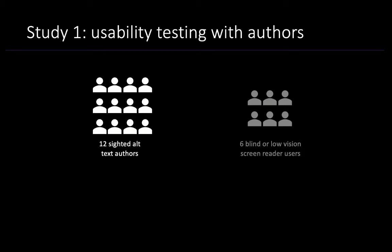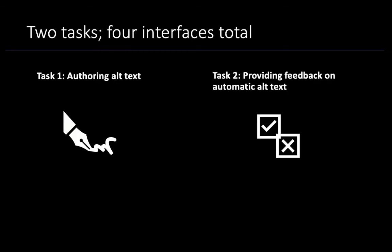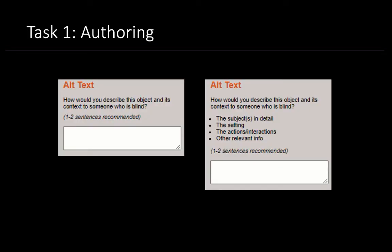Let's jump into the first study. There were two main tasks that we wanted to support: writing alt text for images, and providing feedback on the automatic alt text for images. In today's presentation, we'll only be talking about this first task for brevity. For this task, we adjusted the existing alt text editing pane, adding prompts depending on the type of image.